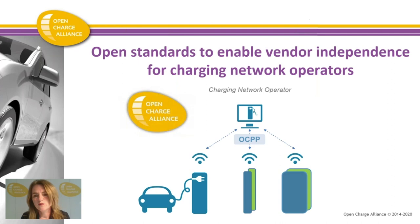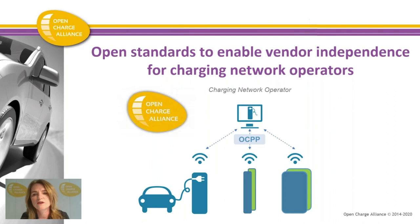The benefit if you are a vendor running or operating a network is that you can select the charging stations as you go. Nobody installs a network all at once — everybody does it gradually over a few years. When you use OCPP, you can buy a first batch from Vendor A and B, and as you develop new markets you can buy a second and third batch from C and D, so you can keep mixing your providers of charging stations inside your network.